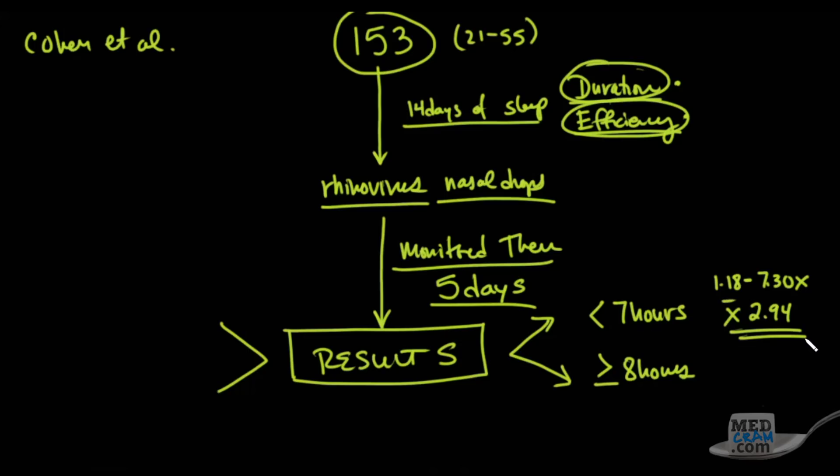Those with less than seven hours of sleep were anywhere between 1.18 and 7.30 times the likelihood of having cold symptoms—on average 2.94. Based on duration, if you had less than seven hours, you were on average 2.94 times more likely to develop a cold than those who slept greater than eight hours.